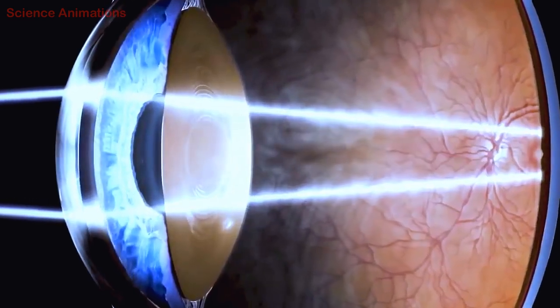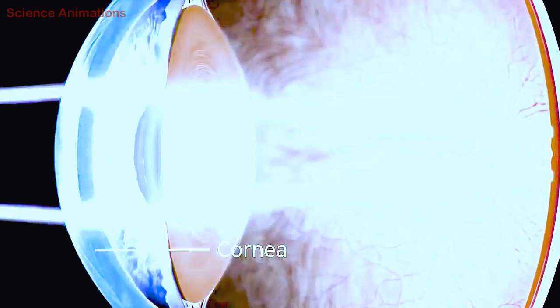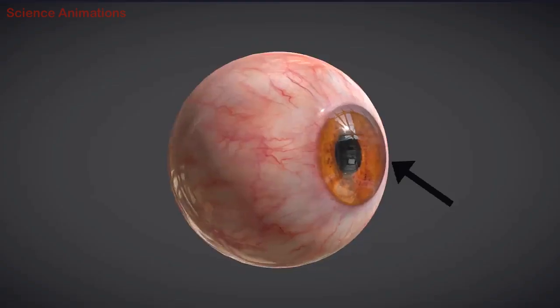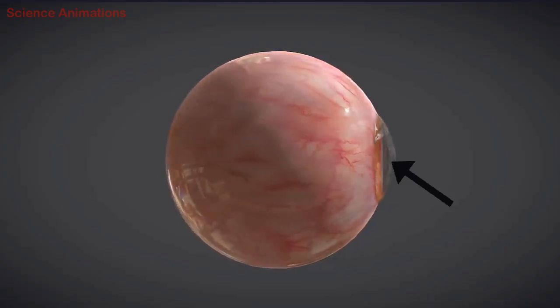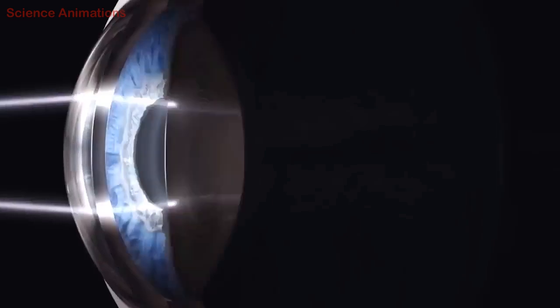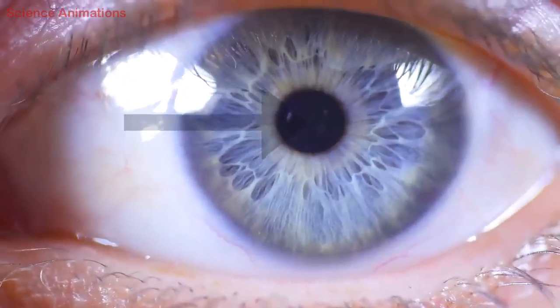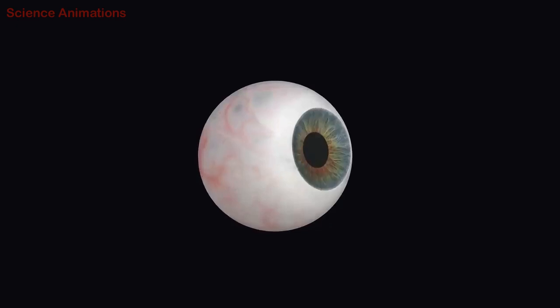Light enters the eye through the cornea. The cornea is a curved layer located in front of the iris and pupil. It serves as a protective covering. After passing through the cornea, light enters through the pupil.